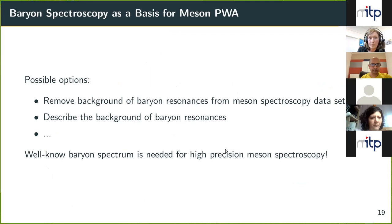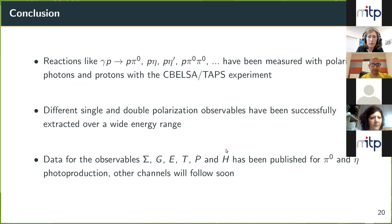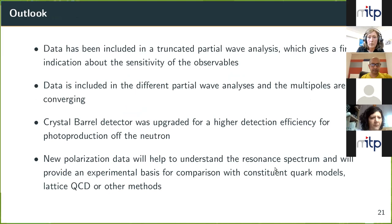In conclusion, with the CB-ELSA-TAPS experiment we measured several different reactions with polarized photons and protons and extracted many polarization observables over a wide energy range. Several data sets have been published, mostly for π⁰ and eta; other channels like two π⁰ will hopefully follow this year. A truncated partial wave analysis provided first sensitivity insights, and this method is currently being extended using Markov chain Monte Carlo and Bayesian inference. The data sets included in different partial wave analyses show converging multipoles — which is very promising.